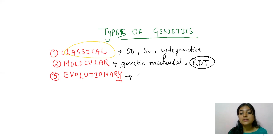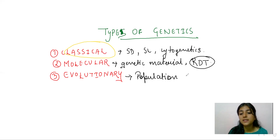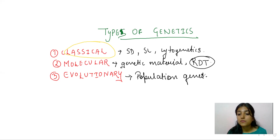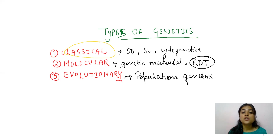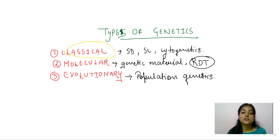Evolutionary genetics is the study of population genetics — the evolutionary changes which occur in gene frequencies within a population. But we are only concerned with the classical type.